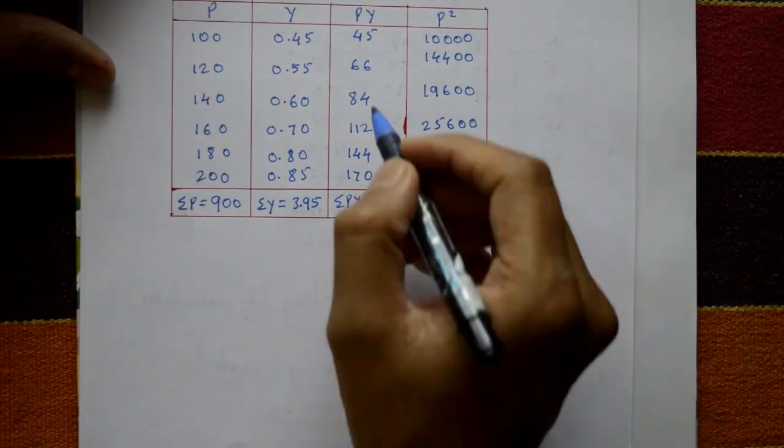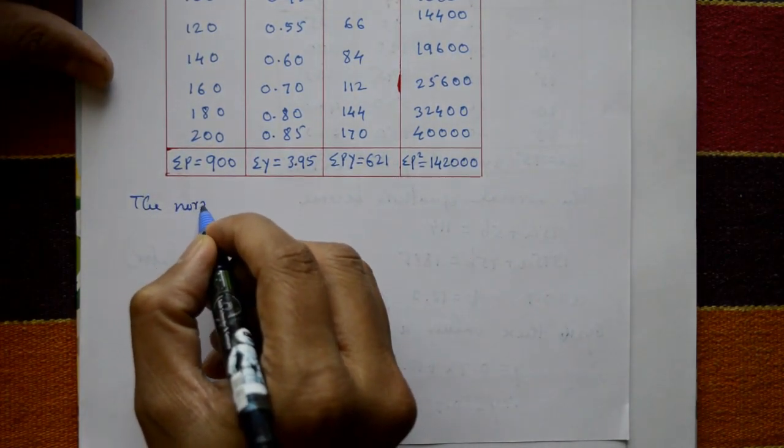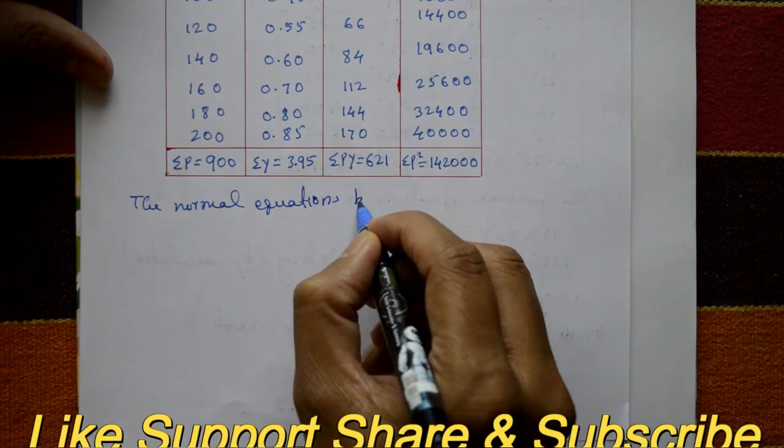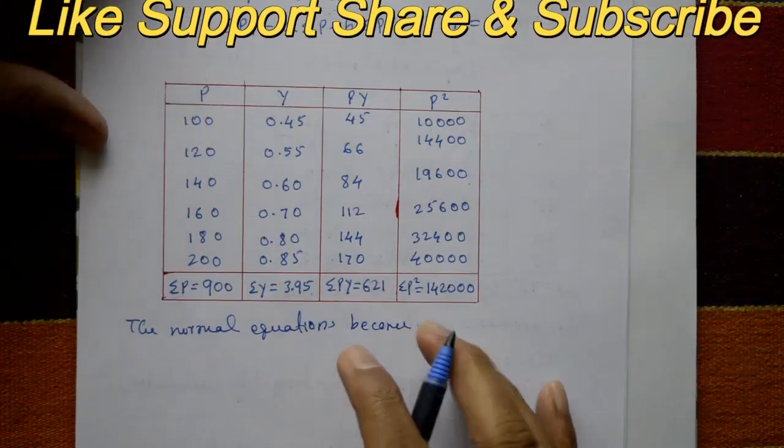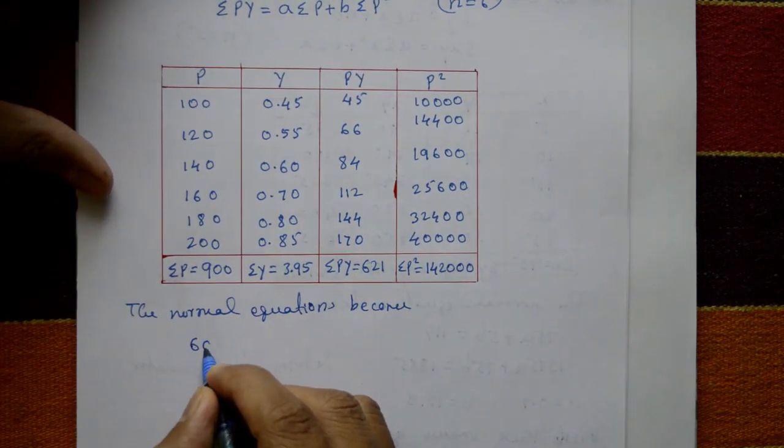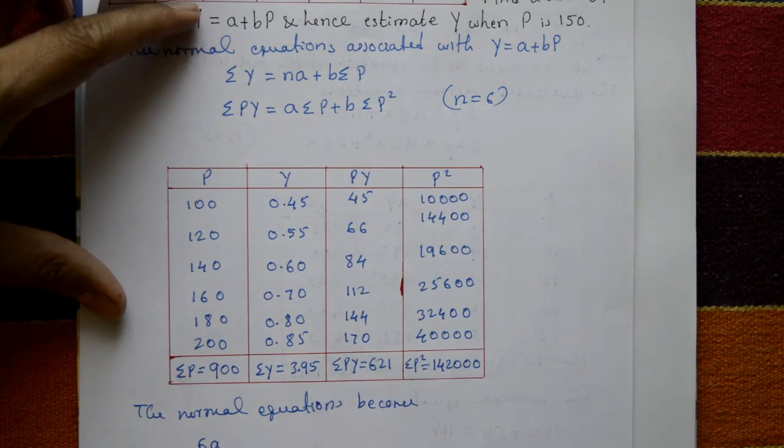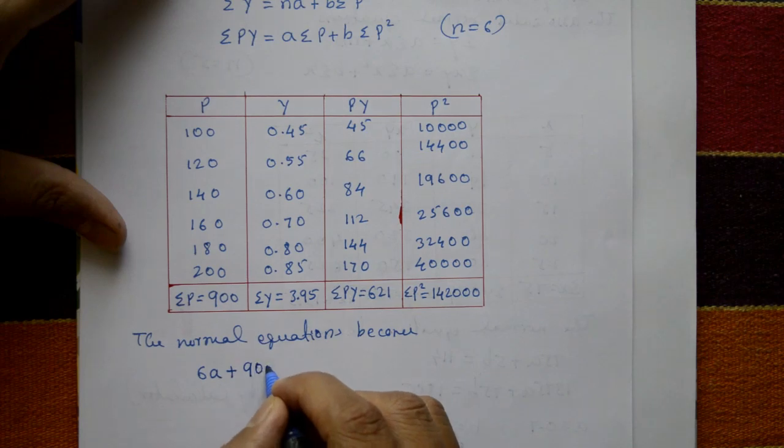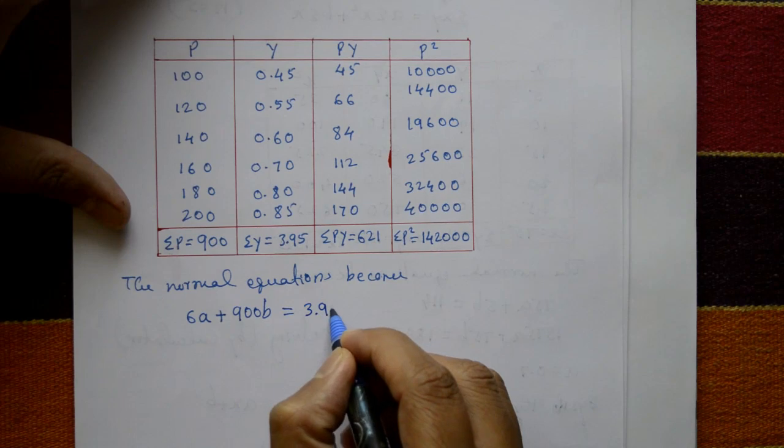Now substitute this in the normal equations. The normal equations become: 6A plus 900B is equal to summation Y, which is 3.95.